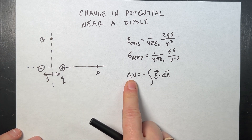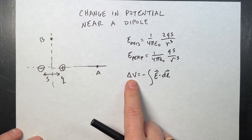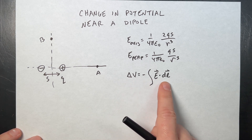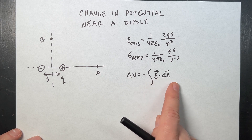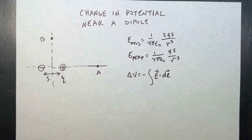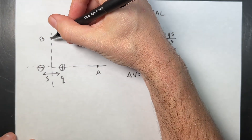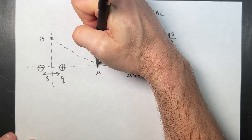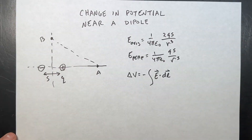We define the change in potential as the negative of the path integral of E·dL. So imagine going from point A to point B along a straight-line path. That's not trivial, because the electric field changes direction all along the path.